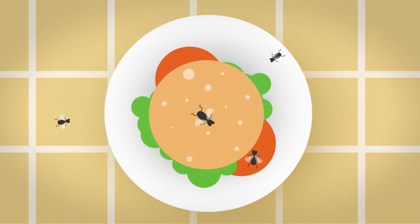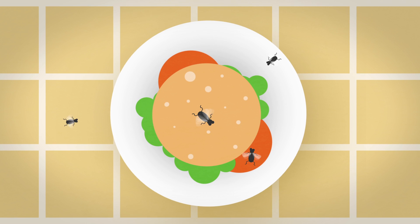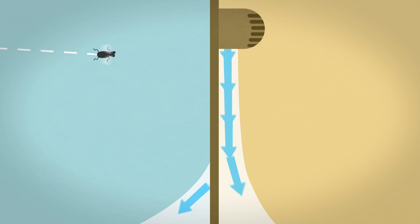Air curtains also keep flying insects away from workspaces, perfect for food preparation or food processing plants.